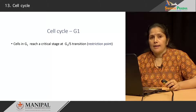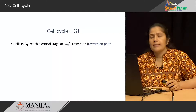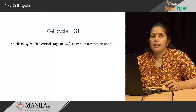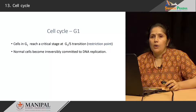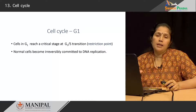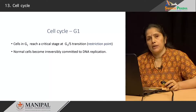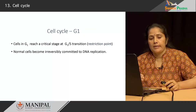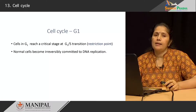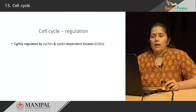As cells are in the G1 phase, they reach one critical point known as the restriction point at the G1/S transition. At this point, the cell becomes irreversibly committed to its DNA undergoing replication — after this there is no going back, and the cell must enter the next phase.